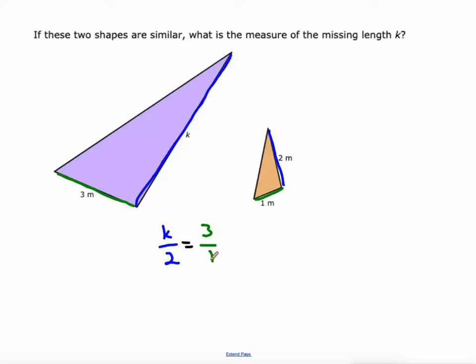3 corresponds to 1. So this reads K is to 2 as 3 is to 1, and then we can solve this using scale factors. 1 times 2 is 2. So if we do the same thing with 3, 3 times 2 will give us K, and K is 3 times 2 is 6 meters.